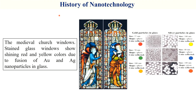Another historical example is medieval church stained glass windows, which show shining red and yellow colors. These colors are produced only due to nanoparticles of silver and gold embedded in the glass. This is also evidence of the use of nanotechnology in history.